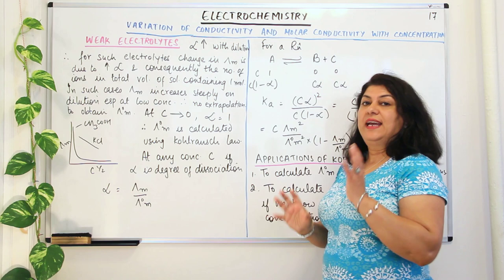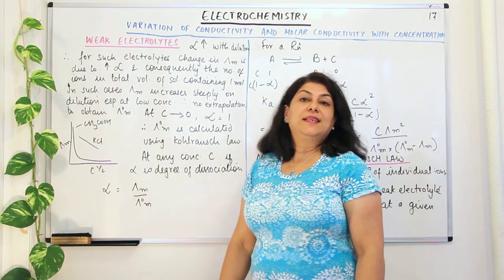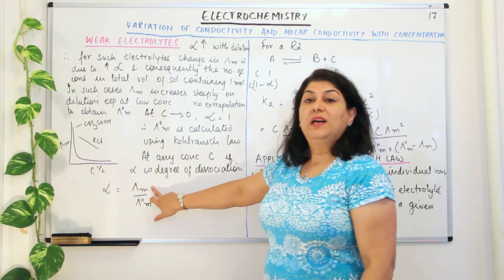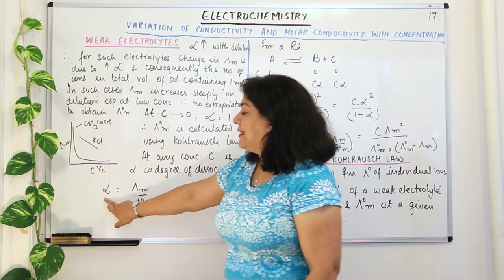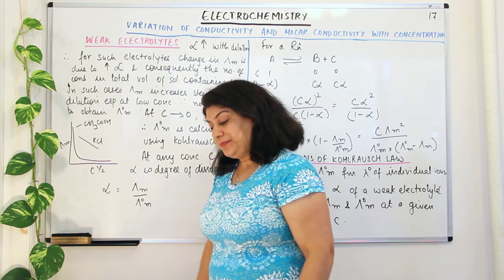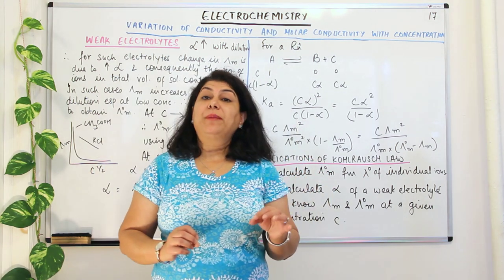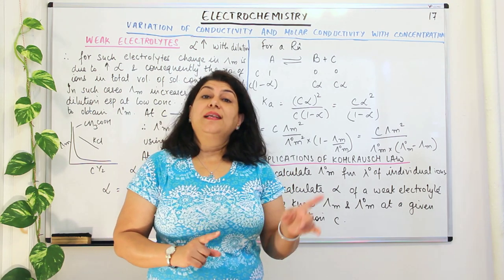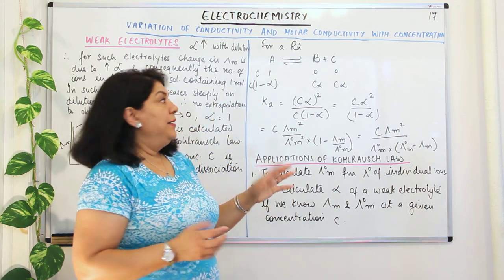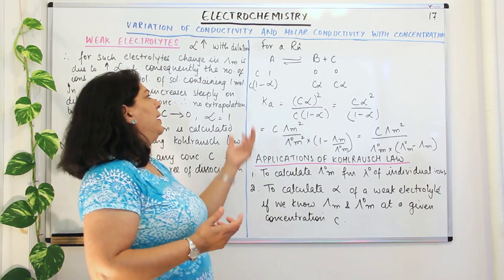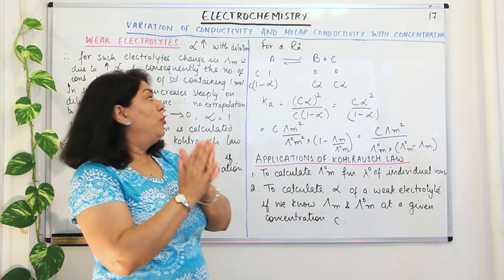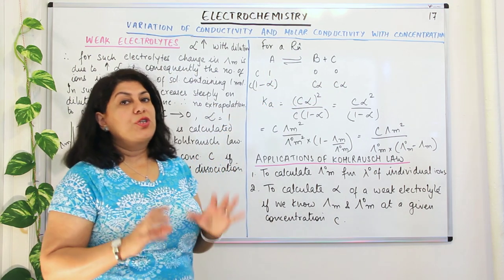At any concentration C, if alpha is the degree of dissociation, we find that alpha equals lambda M upon lambda°M. Recall from chemical equilibrium in class 11: consider an electrolyte A dissociating into B plus C. Initially you have all A and no products. At equilibrium, if alpha is the degree of dissociation, the concentration of B and C each would be C·alpha, and the concentration of A at equilibrium would be C minus C·alpha, which equals C(1 − alpha).